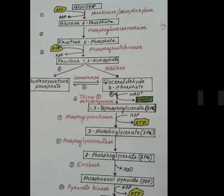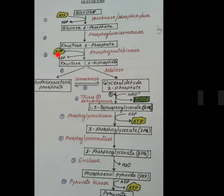When glucose oxidizes and breaks, initially 2 ATP molecules are utilized — here is 1 ATP and here is 1 ATP. Then 4 ATP molecules are produced. So net, from glycolysis we have 2 ATP molecules: 4 produced minus 2 used equals 2 net ATP.